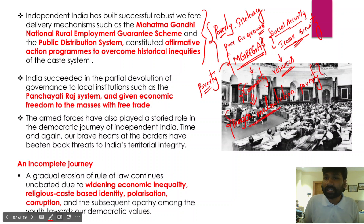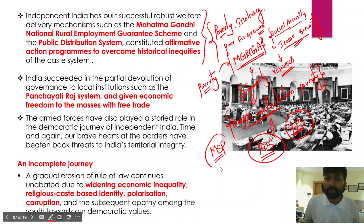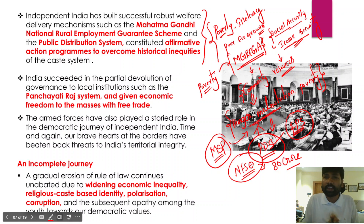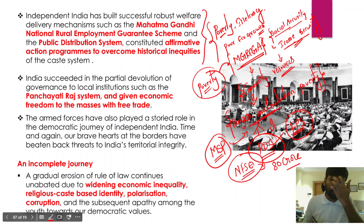One significant achievement in addressing hunger was the Public Distribution System — distributing food grains through fair price shops at subsidized prices. Food grains are procured from farmers at minimum support prices, stored in buffer stocks, and distributed to eligible beneficiaries. The National Food Security Act mandated that 80 crore beneficiaries would be given subsidized food grains. This program has been implemented right after independence to deal with problems of poverty, malnutrition, and hunger.